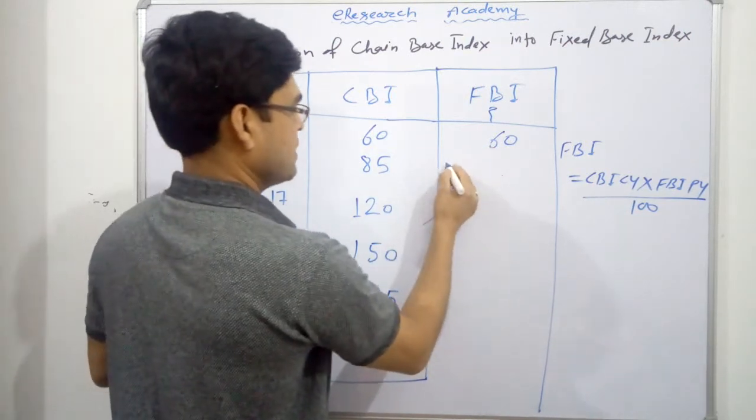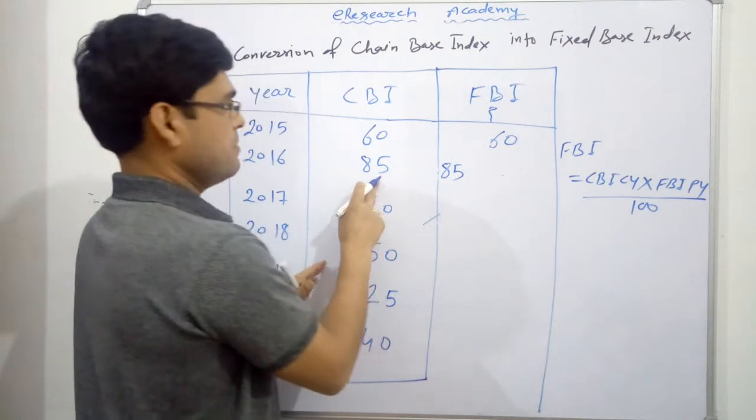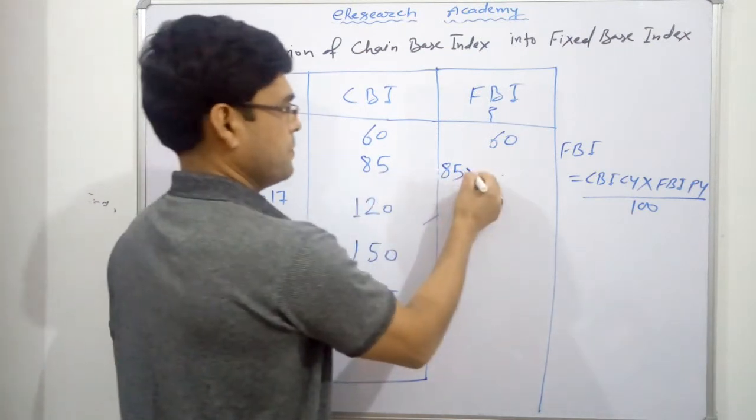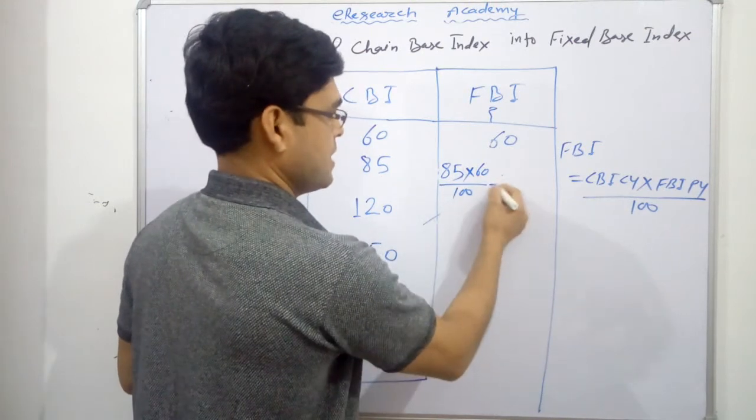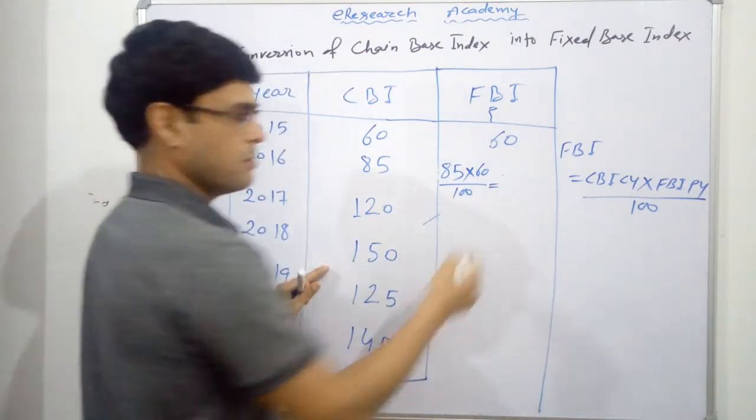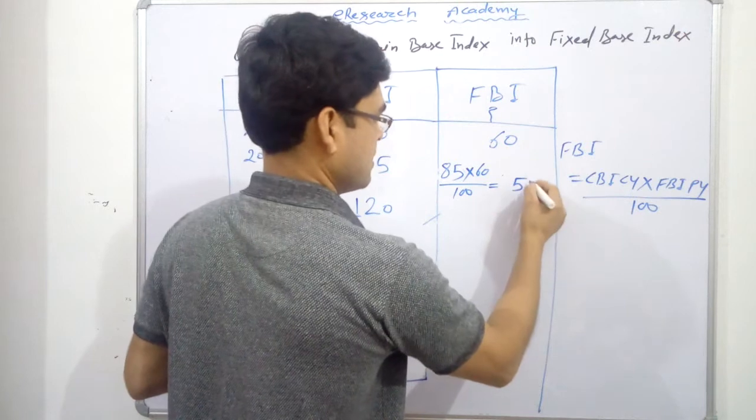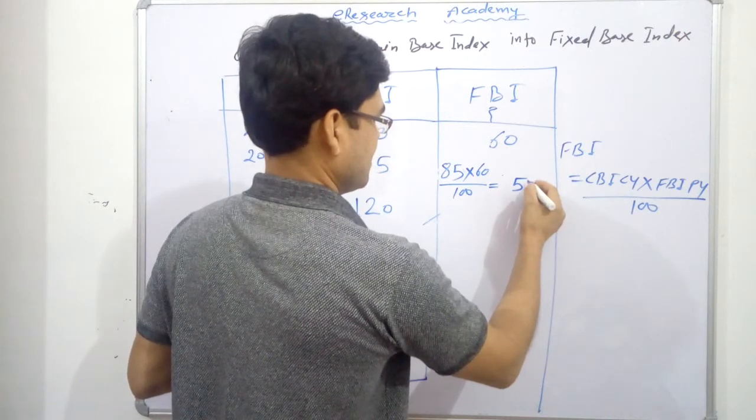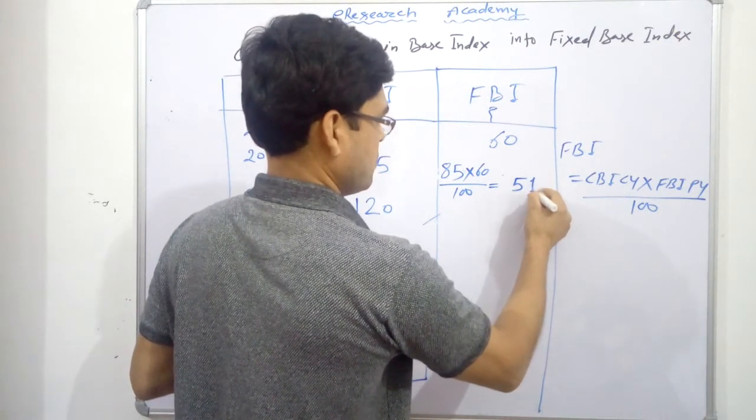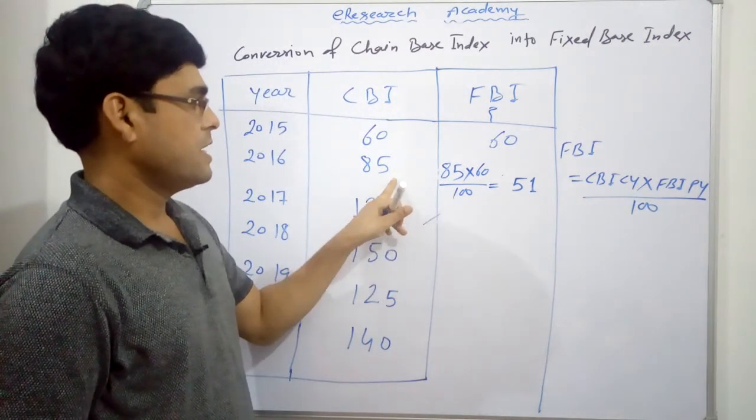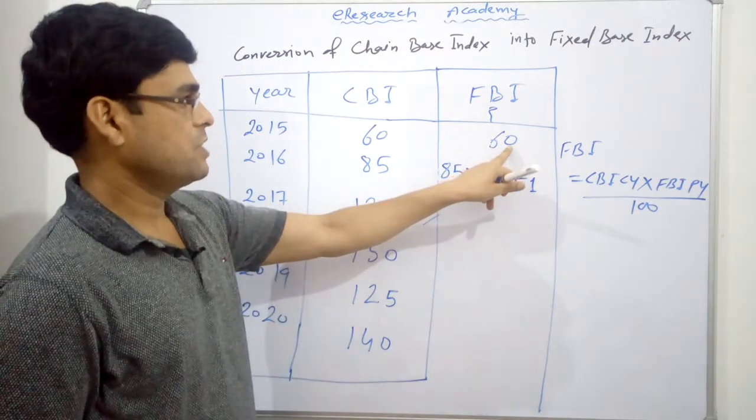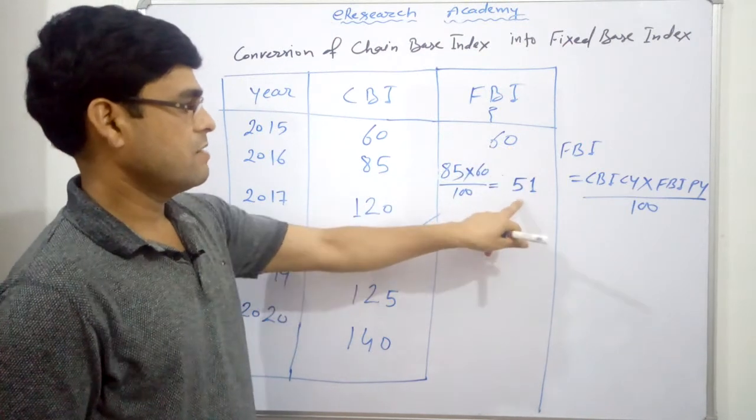For next year, CBI will be 85. So FBI of current year is 85, into FBI of previous year is 60, by 100. So this will give us 51.